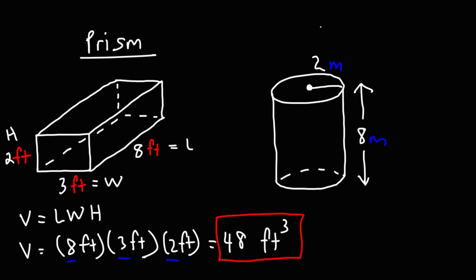Now on the right, we have a cylinder. And the formula that we need to calculate the volume of the cylinder is pi r squared times the height.